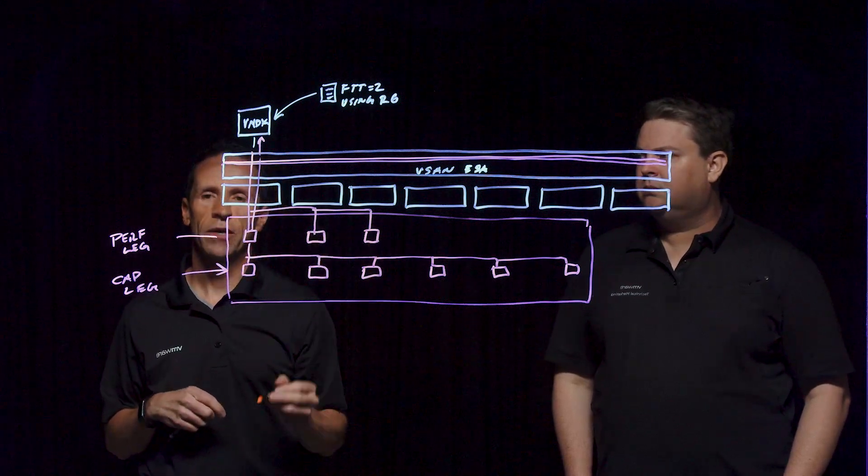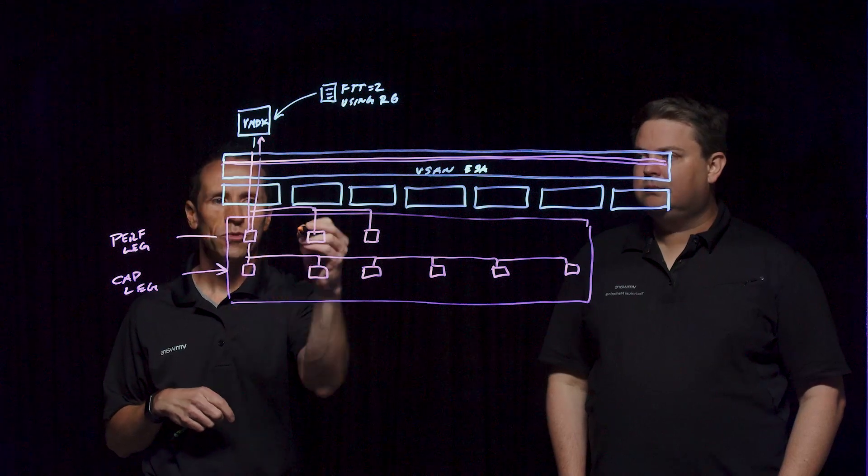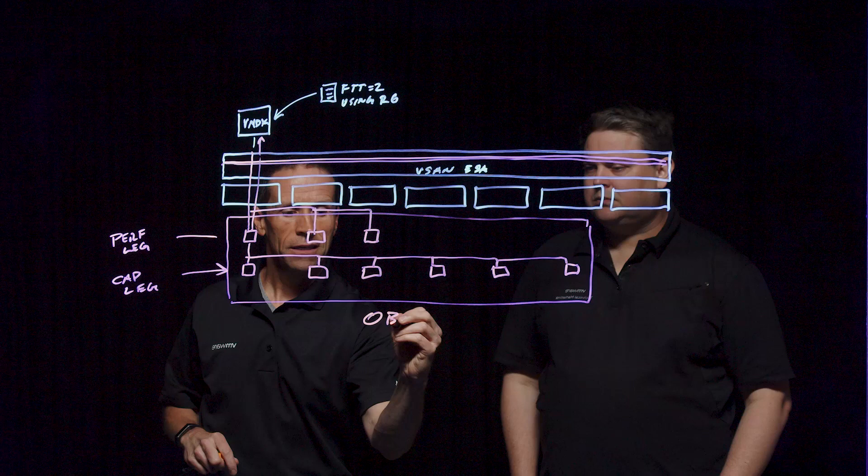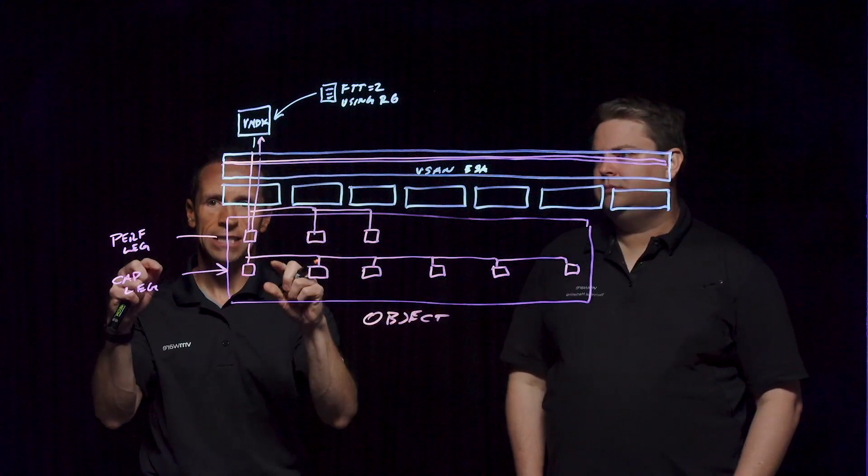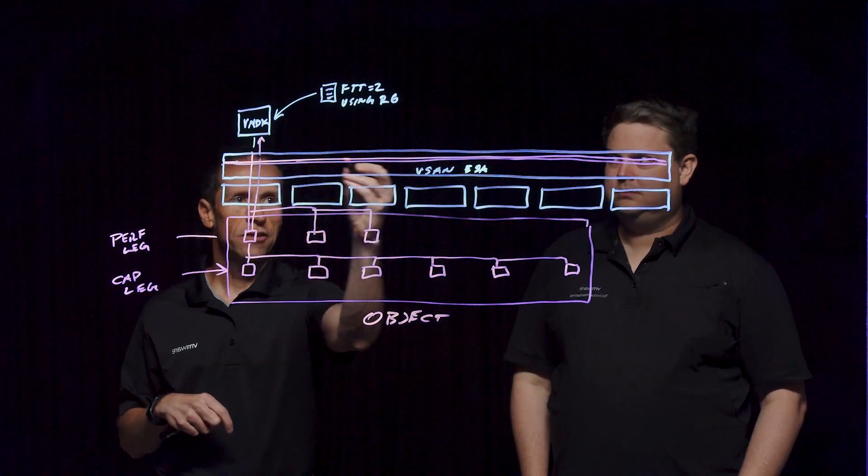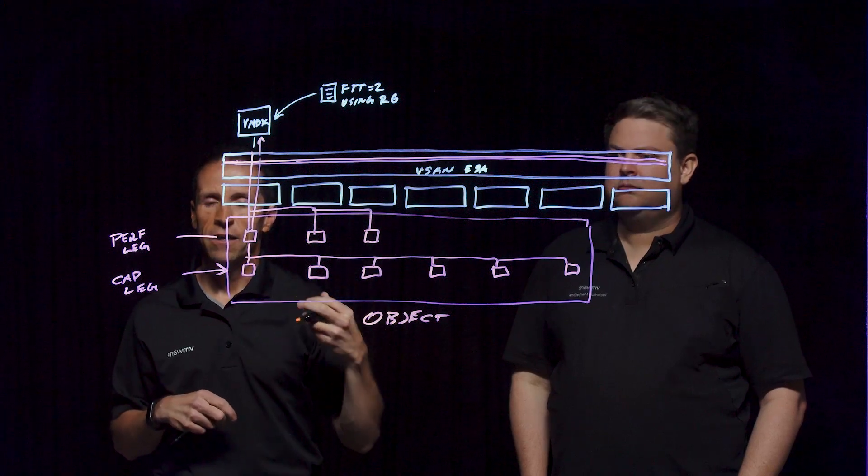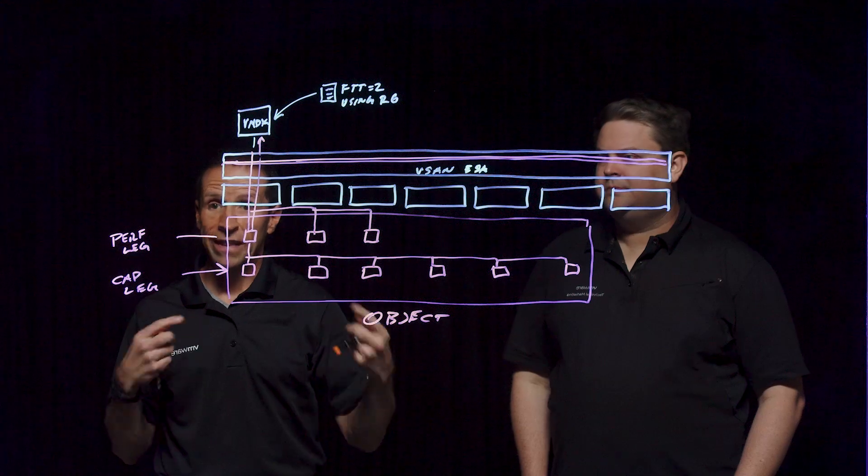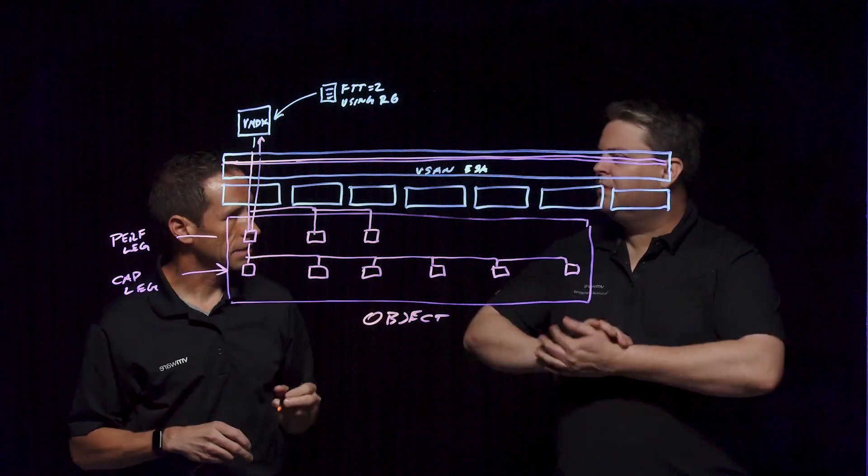And this is such a great representation of that because when we're really looking at these two new legs of an object, which this is, this is where we can see how we are able to take advantage of this new architecture, using the new log structured file system within vSAN to deliver that performance and space efficiency without any compromise. And that's really one of the key benefits here about the ESA.